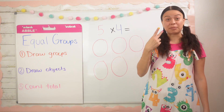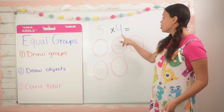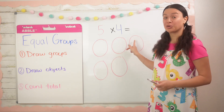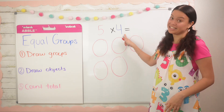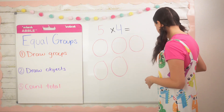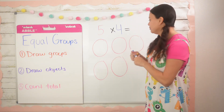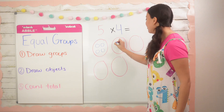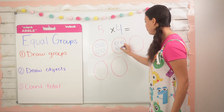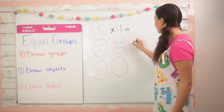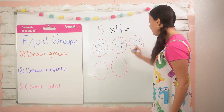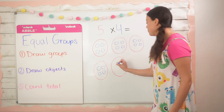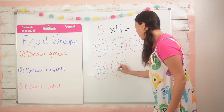Step number two says to draw the number of objects. Our second factor tells us how many objects to draw in each group. In this case the second factor is four. So I'm going to draw four here: one, two, three, four. Four here: one, two, three, four. Yet again: one, two, three, four. And one more time: one, two, three, four.